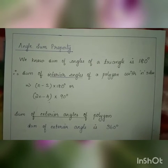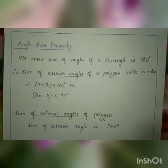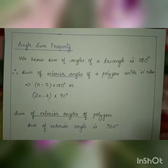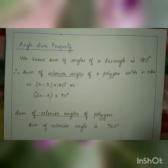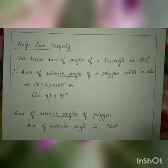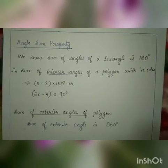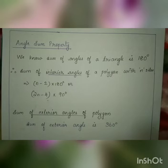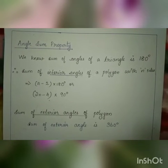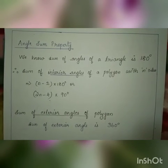You should memorize this equation. Next, sum of exterior angles of a polygon. The equation for sum of exterior angles of a polygon is 360 degrees.